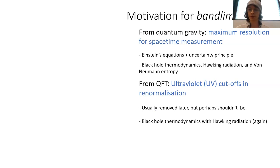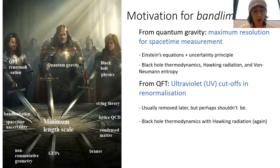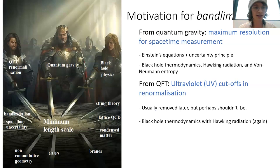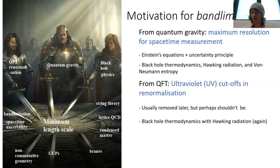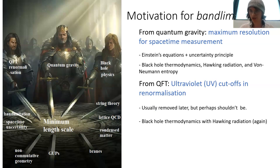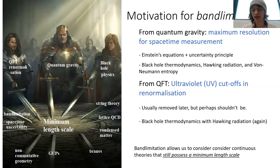Again, we have black hole thermodynamics from Hawking radiation. The idea is that we have all of these things in modern physics that promote this idea of a minimum length scale to the universe, where even though we treat our universe as continuous, there might be a finite scale at which everything becomes discrete at the bottom. Band limitation is a process that allows us to consider continuous theories that still possess such a minimum length scale.